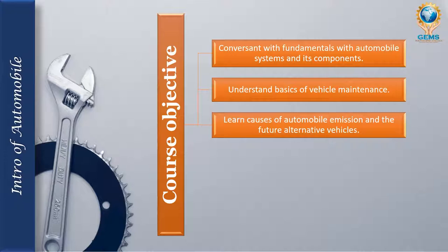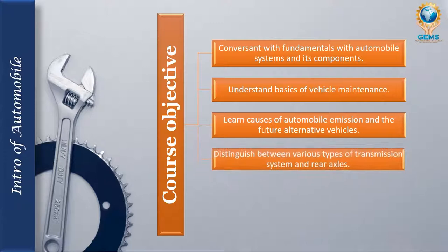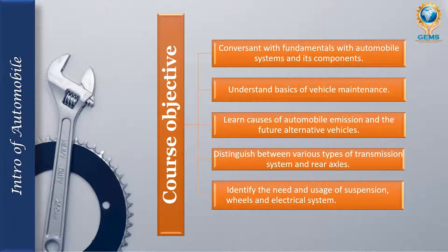The third objective is to learn the causes of automobile emissions and future alternative vehicles — what emissions are happening, how we can overcome them, and how to find alternatives. The fourth objective is to distinguish between various types of transmission systems and rear axles. The fifth objective is to identify the need and usage of suspension systems, wheels, electrical systems such as battery and ignition, and microprocessor-based systems.